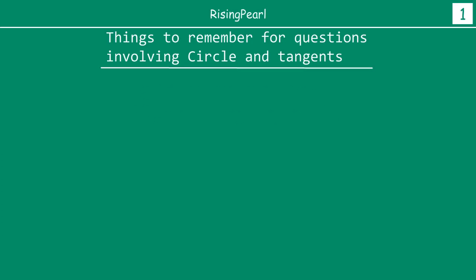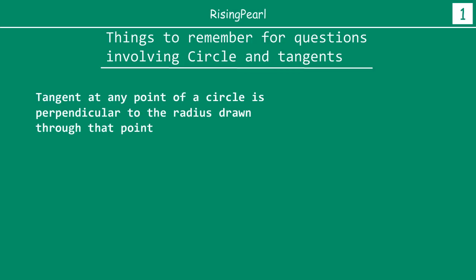Now I want to draw your attention to some basic points that you would want to keep in mind when dealing with questions involving circles and tangents. The first thing is that the tangent at any point of a circle is perpendicular to the radius drawn through it. We have seen that a few episodes ago. This is one of the two very important theorems, and you will almost always be needing this when solving questions on circles and tangents.